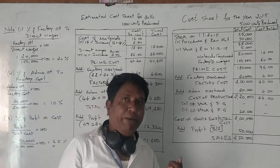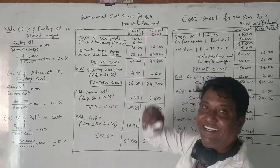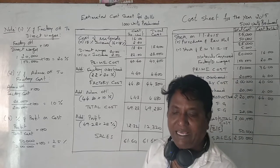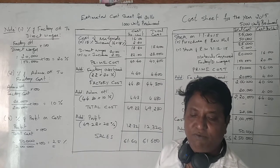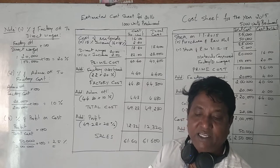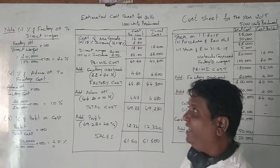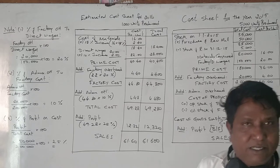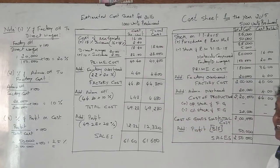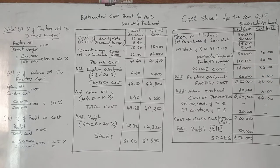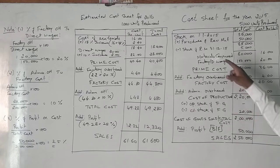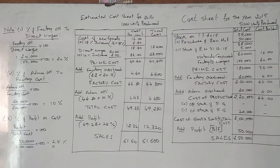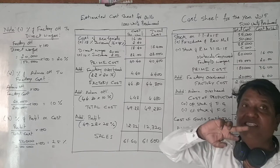Now let us see how to prepare the estimated cost sheet for 2016. The company wants to put in for a contract to supply 1,000 units during 2016. Material cost is expected to increase by 15%, wages by 10%. Whenever an increase in material or wages is given, first concentrate on what the cost per unit was in 2015. The cost per unit for raw material was 16 rupees, and for wages was 20 rupees.